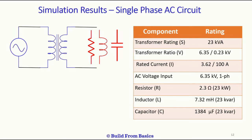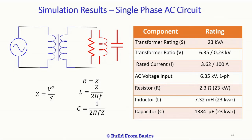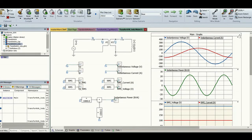The rated current in the primary is 3.62 amperes and in the secondary is 100 amperes. Now let's calculate the resistor, inductor, and capacitor using these formulas: impedance Z equals V² divided by S, where V is 230 V and S is 23 kVA. R equals Z, L equals Z divided by 2πf, and C equals 1 divided by 2πf·Z. Using these formulas we get the component values to use in the simulation.